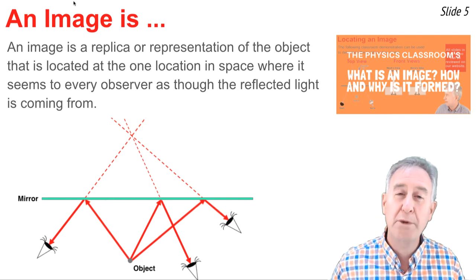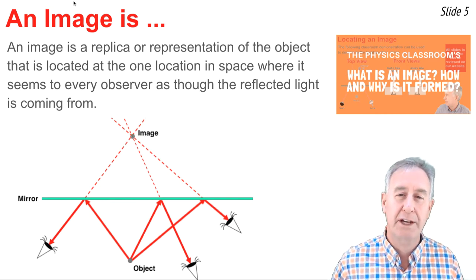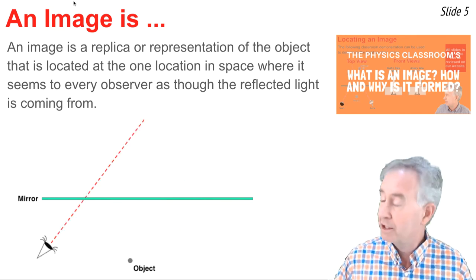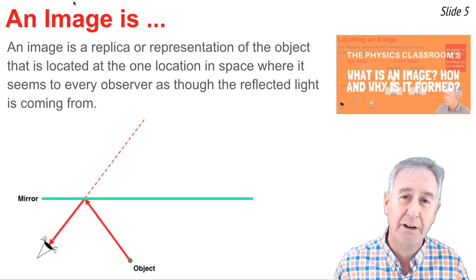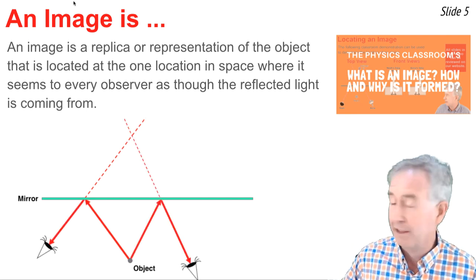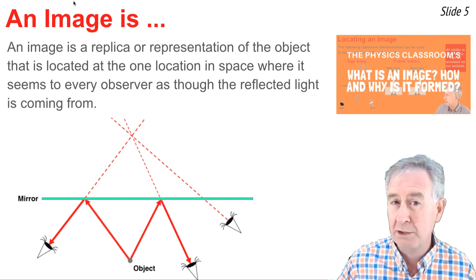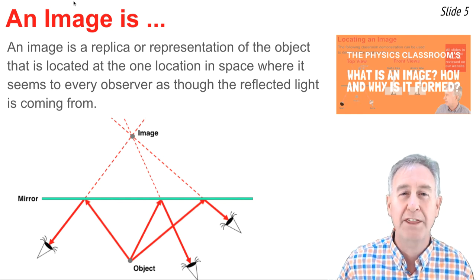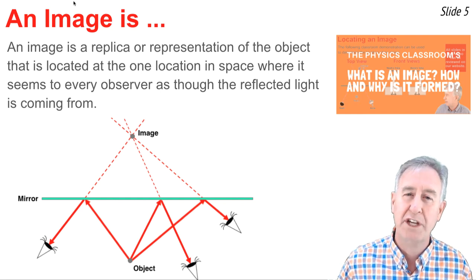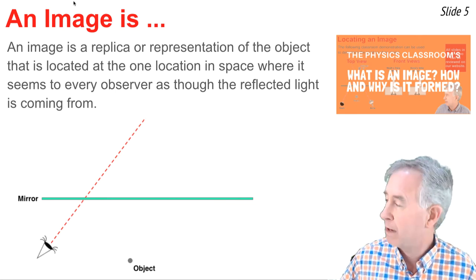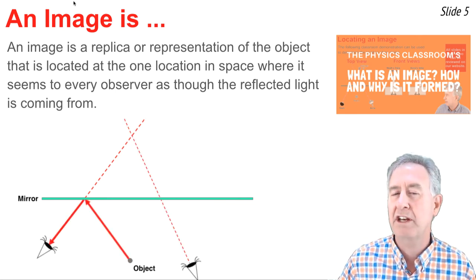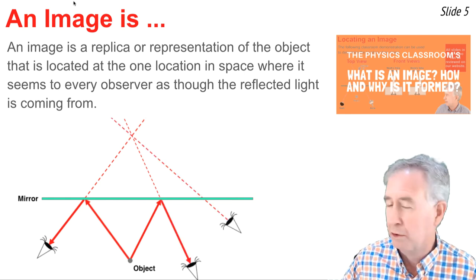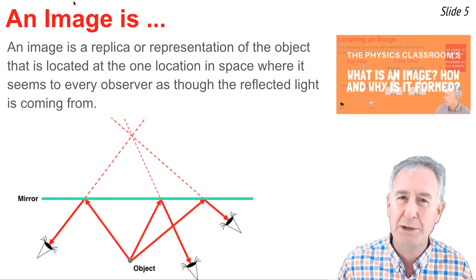An image is a replica or a representation of an object that appears at a location in space where it would seem to every observer as though the reflected light is coming from. In this animation, we have three students sitting in front of a mirror. There's an object there, and each student is sighting at the object, but each student is sighting along a different line of sight. What's true of every line of sight is that there's a reflected ray that bounces off the mirror to the observer's eye. If we take these reflected rays and trace them backwards behind the mirror, what we would observe is that every one of these reflected rays or line of sight would intersect at the same location. We refer to that location as the image location.